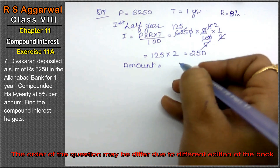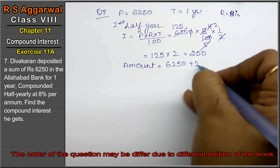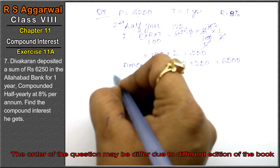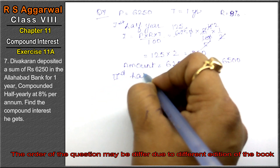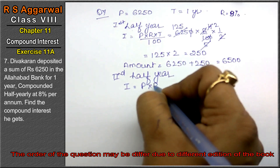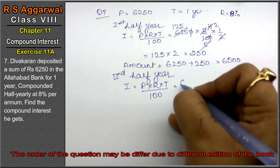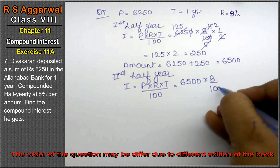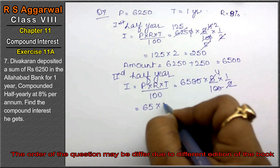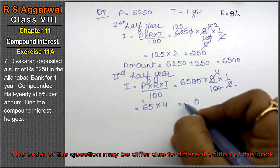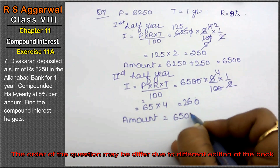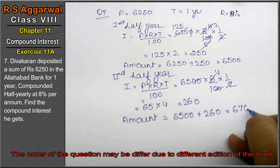Second half year: P is now 6,500, R is 8%, T is half year. Interest equals 6,500 into 8 upon 200, which gives 65 into 4 = 260. Amount equals 6,500 plus 260, that is 6,760.